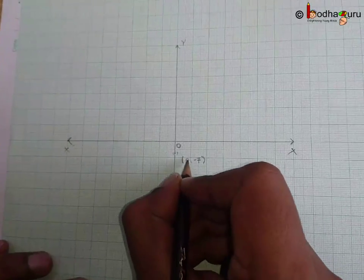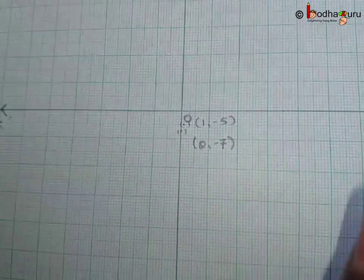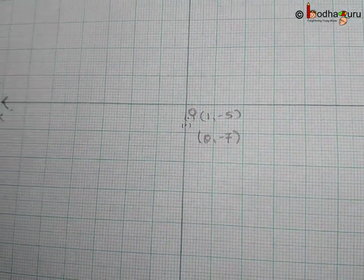So let us mark the points (x, y) as (0, -7) and (1, -5) on the graph paper.